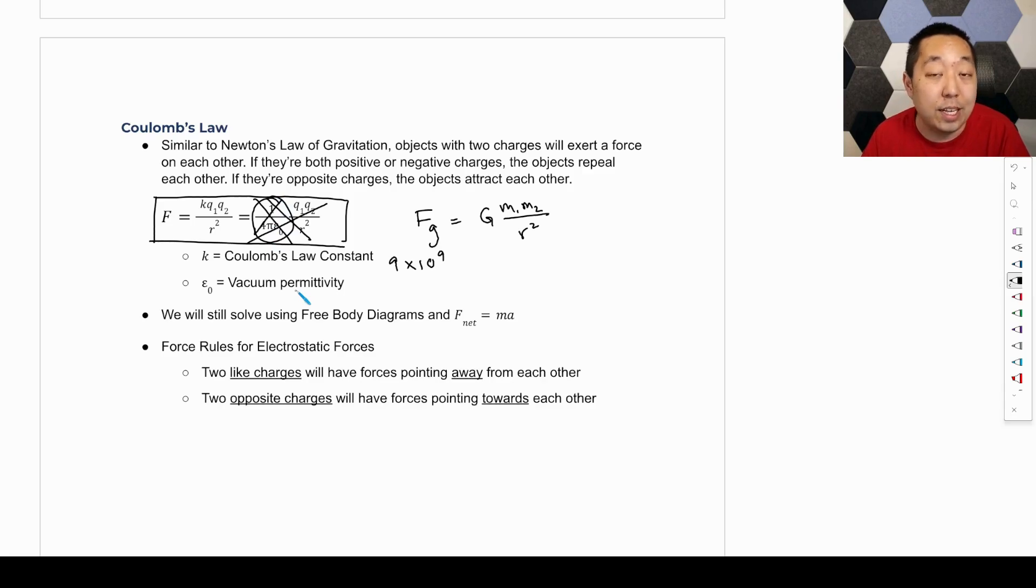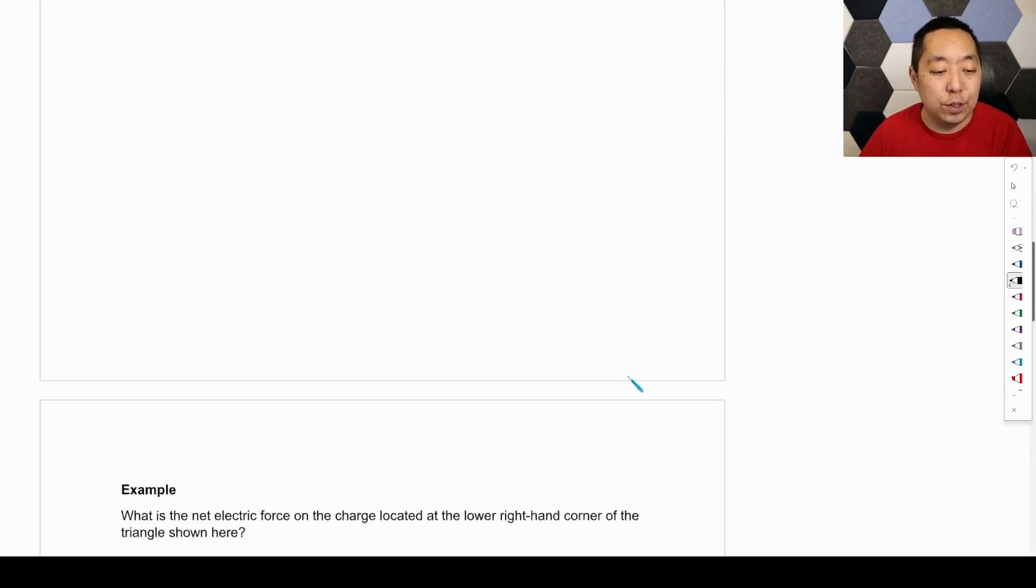General process for forces is like any other force that we do. We're going to start with our free body diagrams and use F net equals M times A. This is our unit 2 process. So if you don't remember how to do that or if it's been a while, we're going to do the exact same thing. Everything that we did with free body diagrams, we're just extending it now to add in a new force. And the rules are two like charges, forces pointing away from each other. Two opposite charges, forces pointing towards each other. And this formula tells you the magnitude of that force.